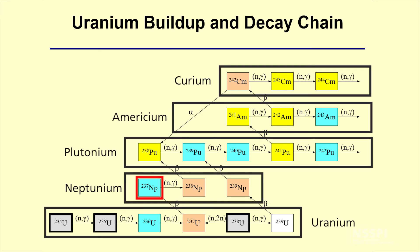Each of the rows on this chart are individual elements: the element of uranium, neptunium, plutonium, americium, and then curium.